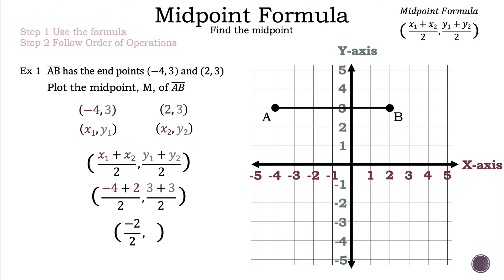We keep the same denominator of 2. Now we add the numerator of the Y part: 3 plus 3 is 6, and we keep the denominator of 2. Now we have negative 2 divided by 2 and 6 divided by 2. Simplifying: negative 2 divided by 2 is negative 1, and 6 divided by 2 is 3. So our midpoint M is equal to negative 1, 3.